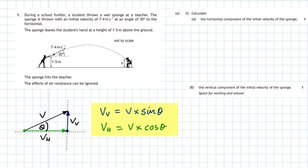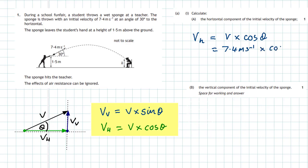The first question is finding the horizontal component - it couldn't be more straightforward. Vh equals V·cos θ. I always remember that for the horizontal component, cos has an O in it - 'O on the ground.' Sticking in the numbers: V is 7.4, multiplied by cos 30 degrees. Put that into your calculator and you get an answer of 6.4 metres per second - that's the horizontal component.